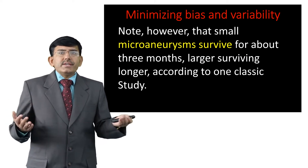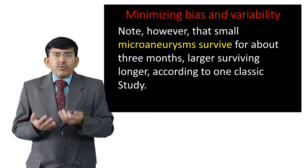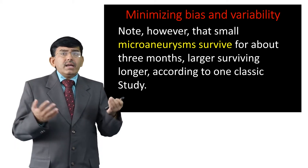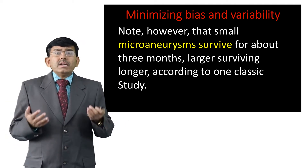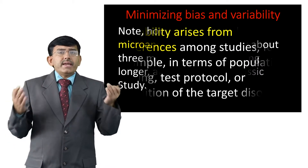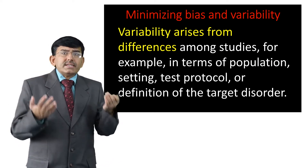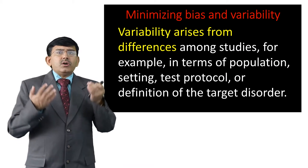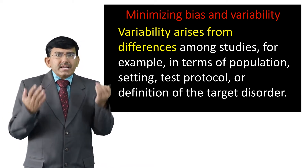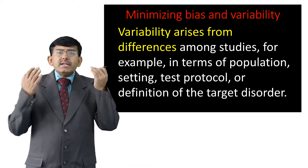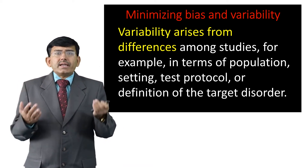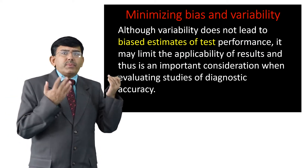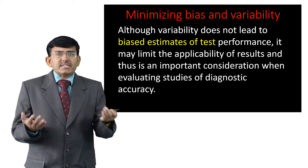Small microaneurysms survive for about 3 months, with larger ones surviving longer, according to one classical study. Variability arises from differences among studies — for example, in terms of population, setting, test protocol, or definition of the target disorder. Although variability does not necessarily bias estimates of test performance, it may limit the applicability of results.